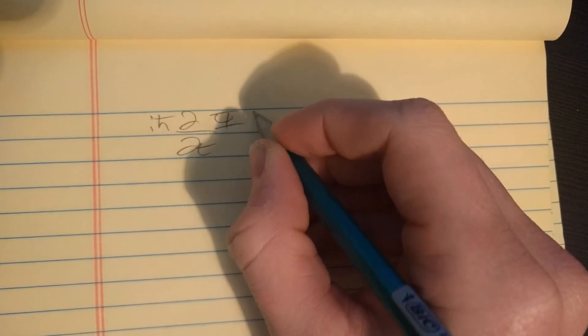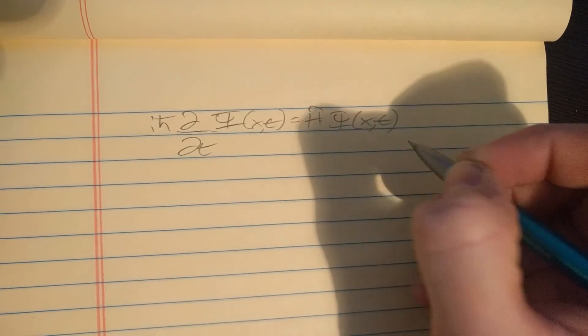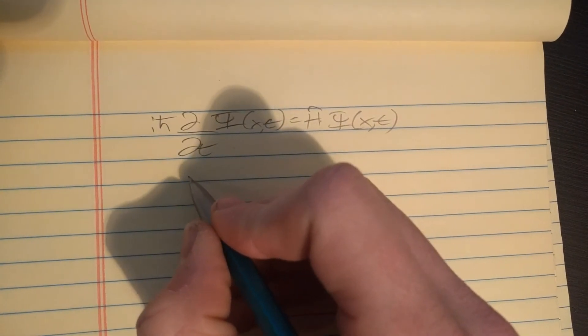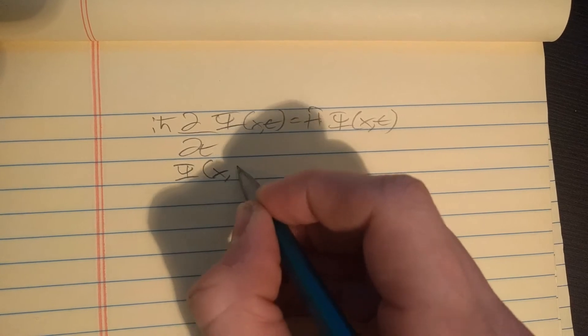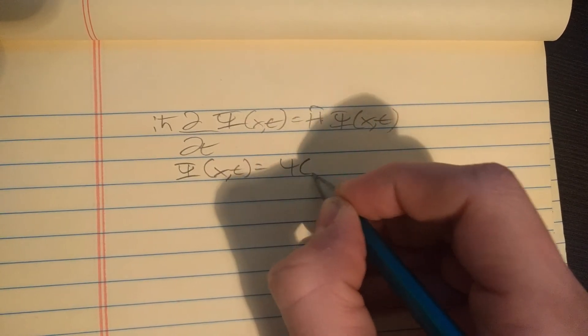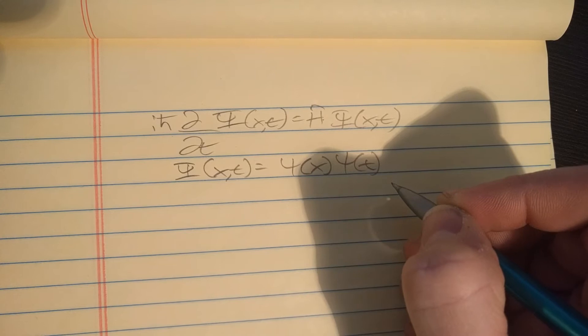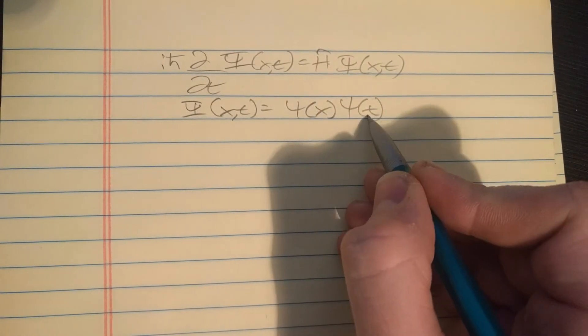Let's rewrite the Schrödinger equation: ih bar d/dt psi of x,t equals the Hamiltonian times psi of x,t. If you've ever taken a partial differential equations class, you know that the go-to method for solving a PDE is to assume your function of two variables is a product of functions of each of those variables. It's called a product solution.